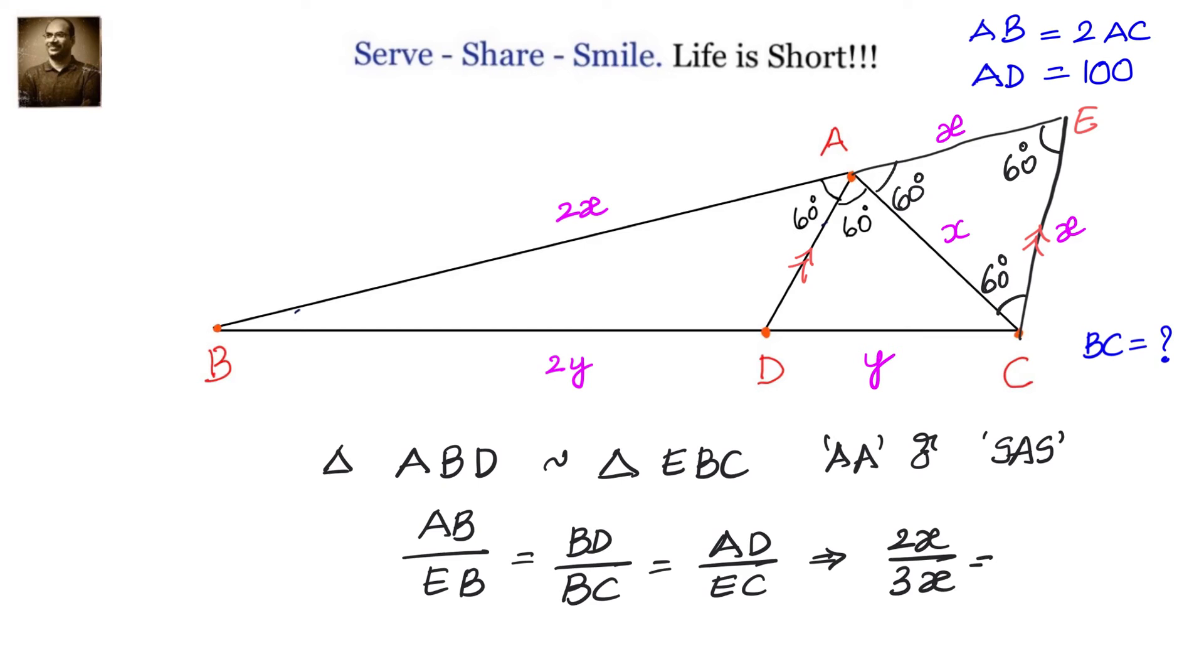We have AB by EB that is 2x by 3x equals BD by BC that is 2y by 3y equals AD 100 divided by EC.